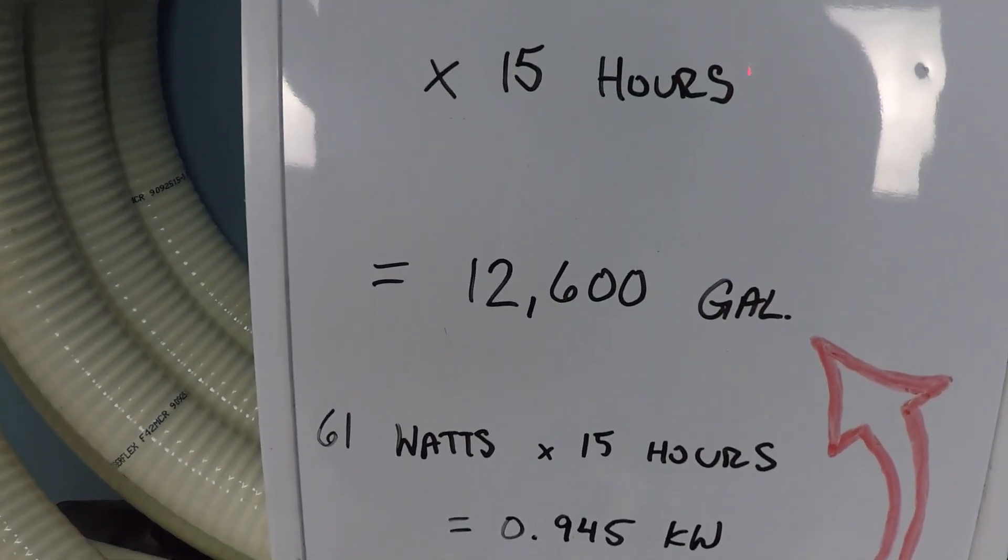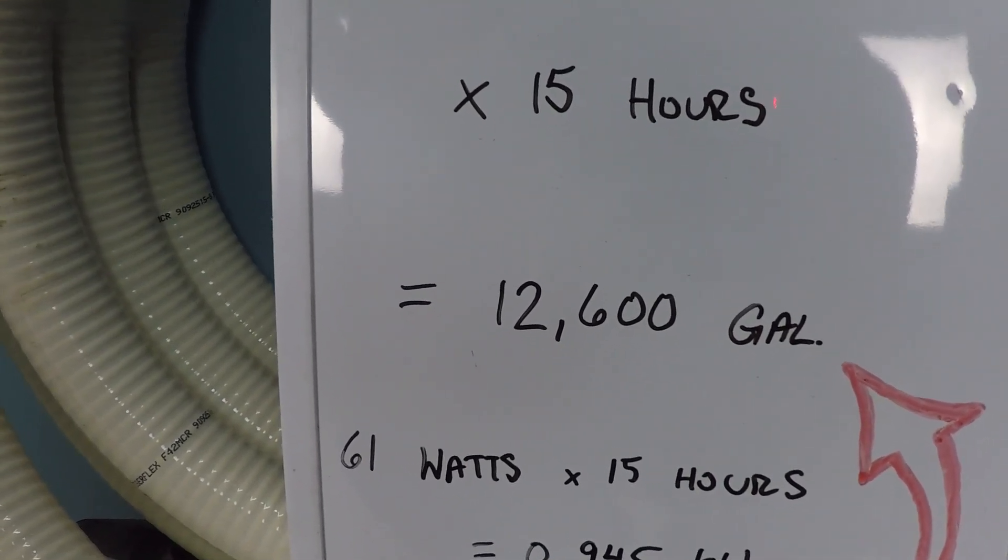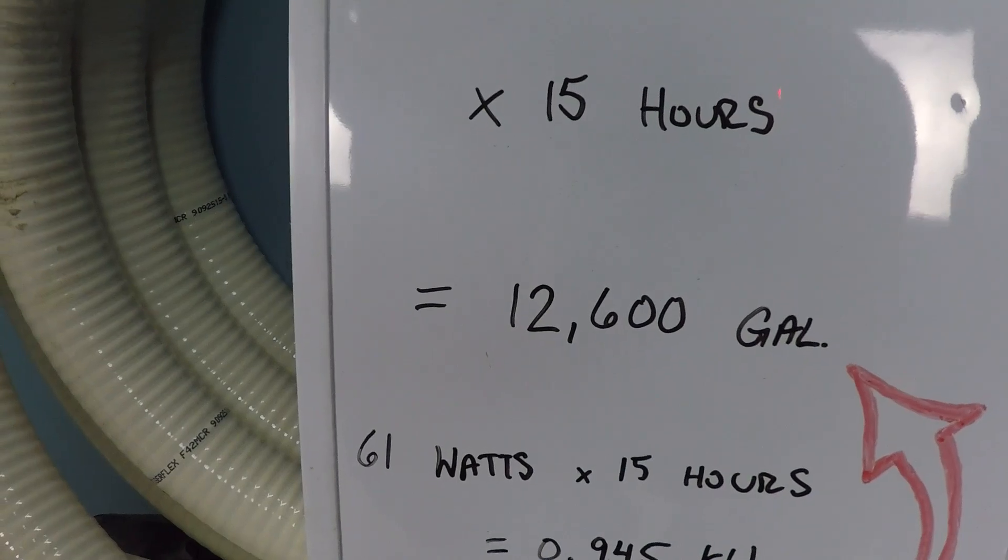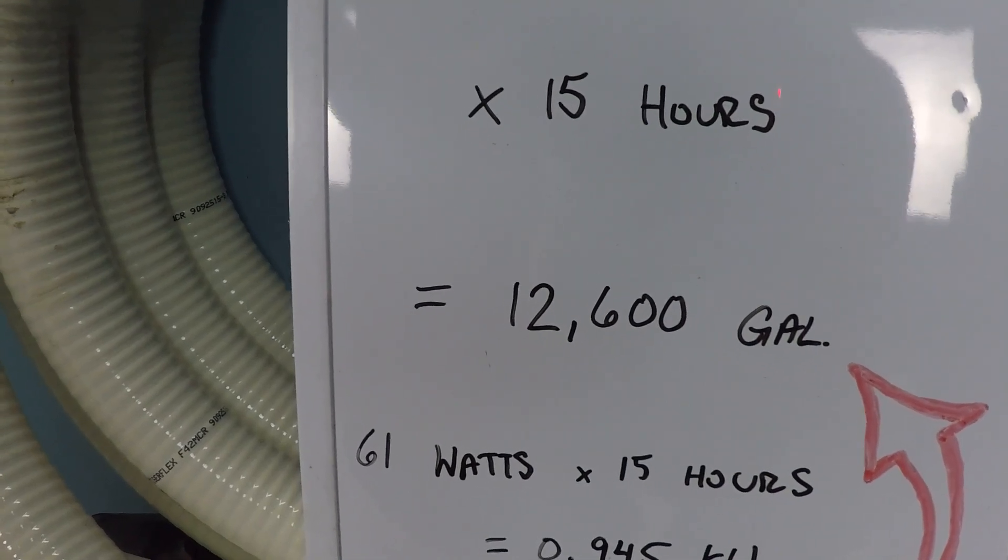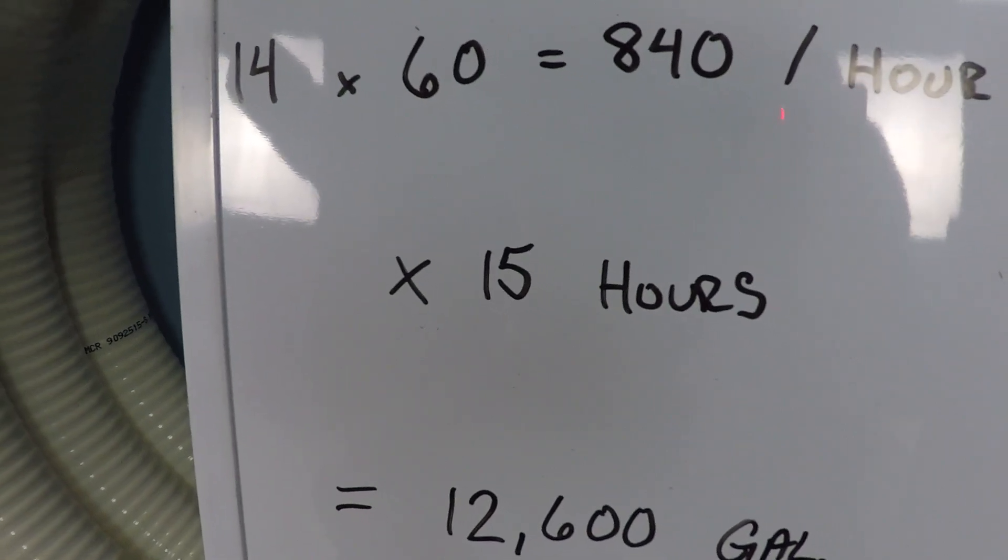That's what you pay to filter 12,600 gallons of water. Again, the goal is not to run your pump like that 24 hours a day, but for long periods of time throughout the day so you can achieve some pretty impressive flow volumes and filtered water for a pretty low price tag.